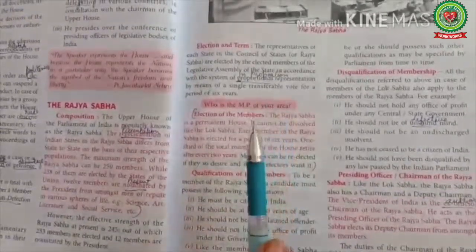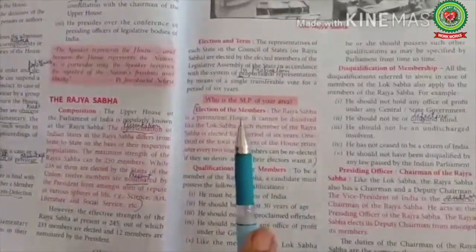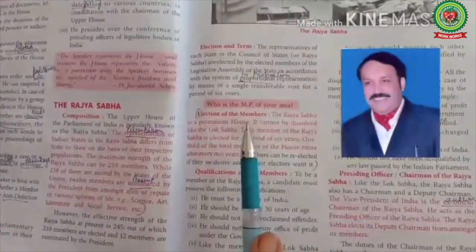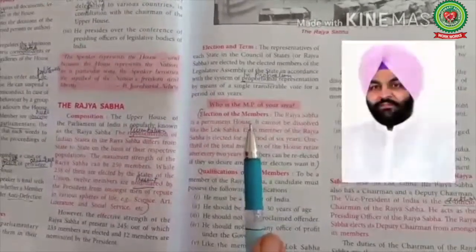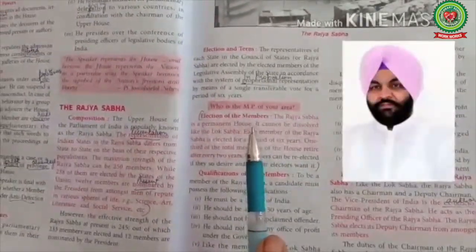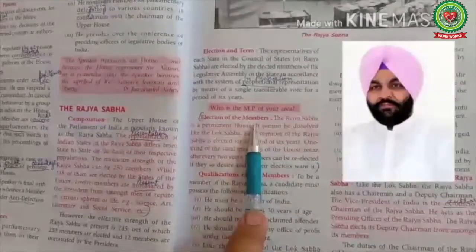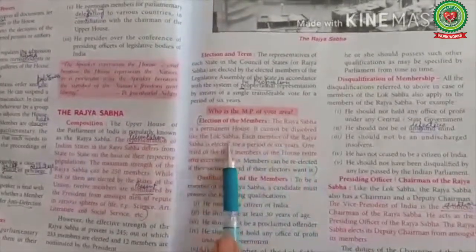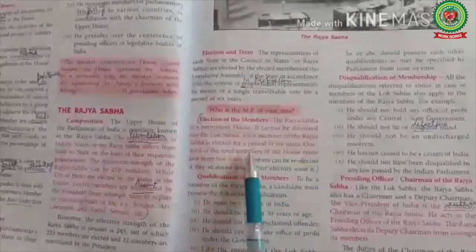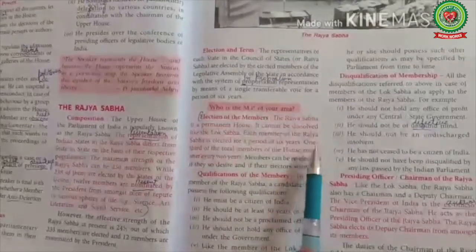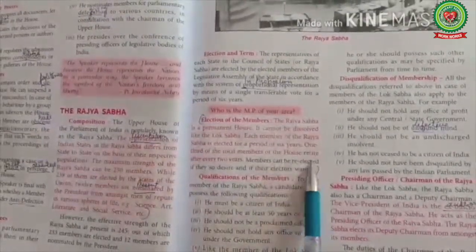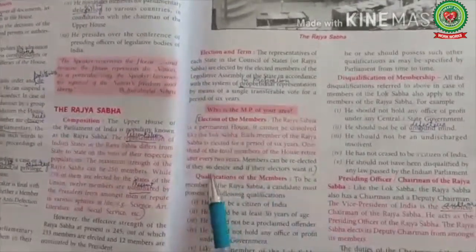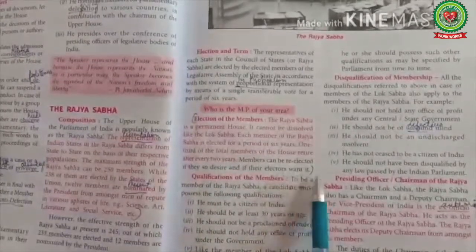At present, Shwet Malik is the MP of Rajya Sabha who represents Punjab, whereas Gurjit Singh Aujla is the MP of Lok Sabha who represents Amritsar. The Rajya Sabha is a permanent house — it cannot be dissolved like the Lok Sabha. Each member of the Rajya Sabha is elected for a period of 6 years, and one-third of the total members of the house retire after every 2 years.